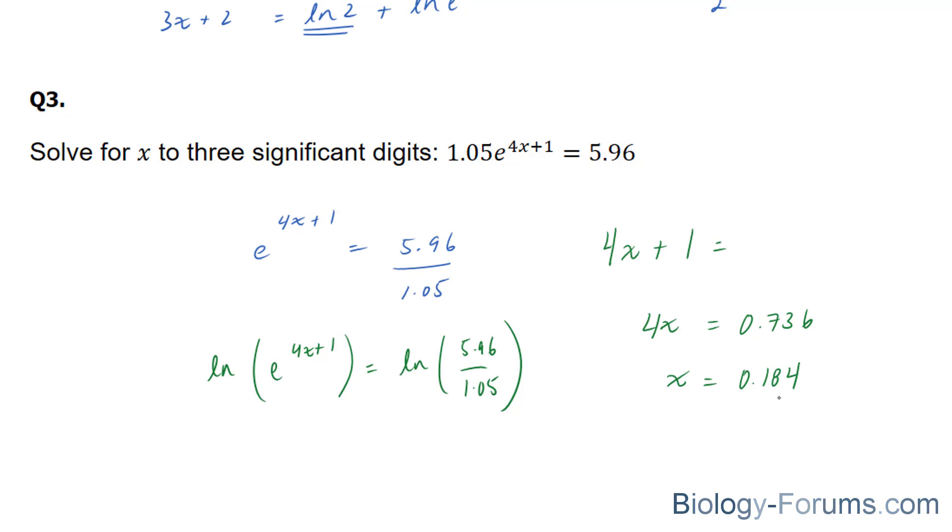So there you have it. That is how to solve equations that contain the base e. The trick is to use ln, to use the natural logarithm, to isolate for the content that's found in the exponents area. If you have any more questions related to this, please comment below, or use our website at biology-forums.com. If you found this video helpful, a like or a subscription to our channel would be appreciated.